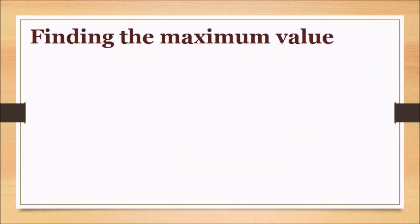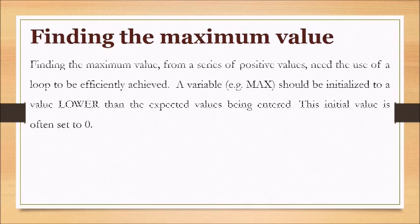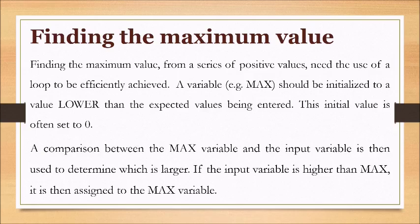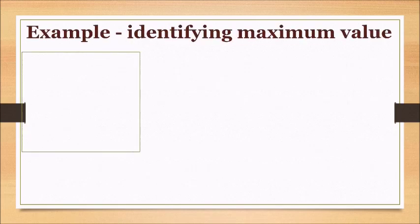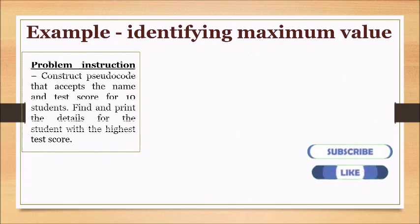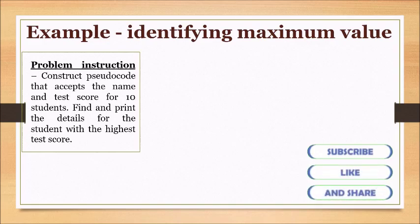Finding the maximum value: finding the maximum value from a series of positive values requires the use of a loop. A variable — for example, 'max' — should be initialized to a value lower than the expected values being entered; this initial value is often set to zero. A comparison between the max variable and the input variable is then used to determine which is larger. If the input variable is larger than max, it is then assigned to the max variable.